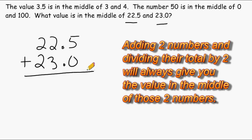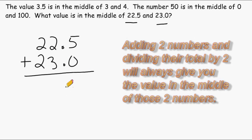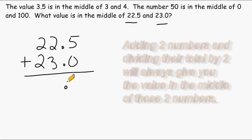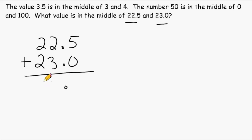So let's add up 22 and a half and 23 together. That is going to give us 45 and a half, or 45 and 5 tenths.